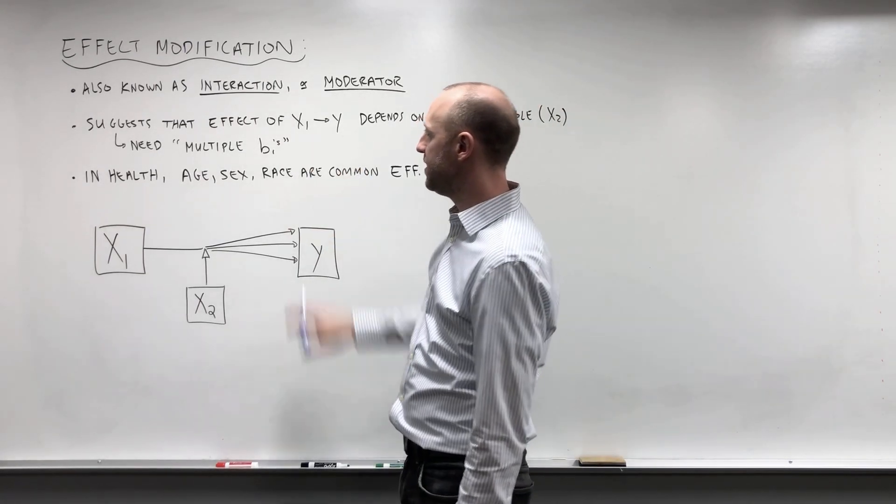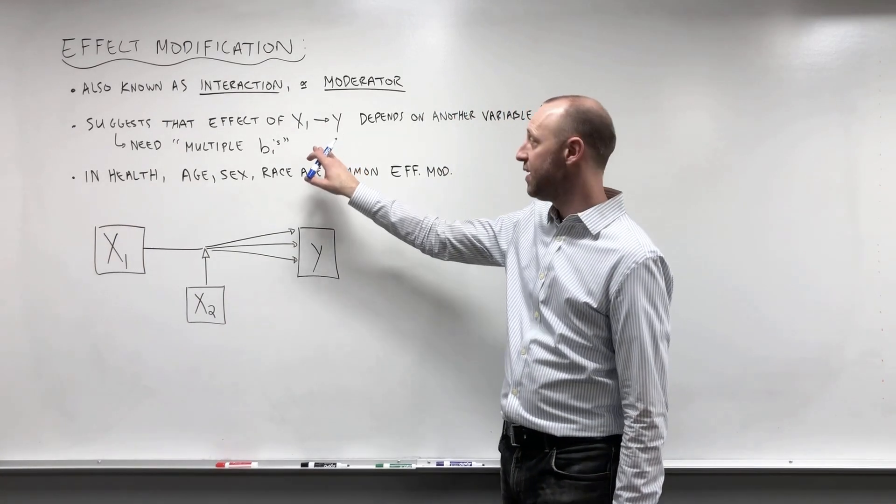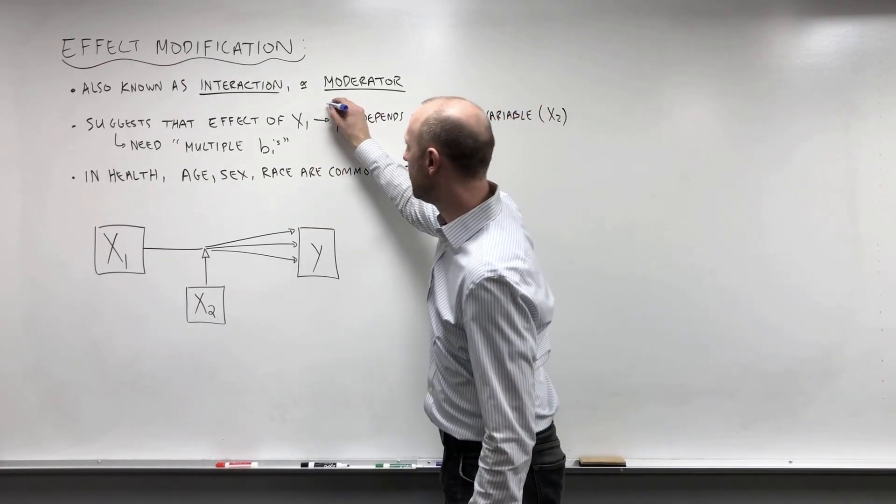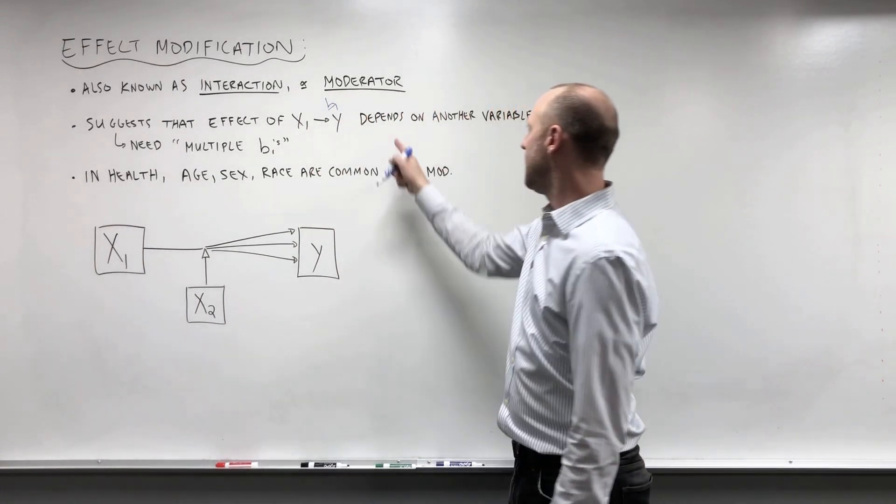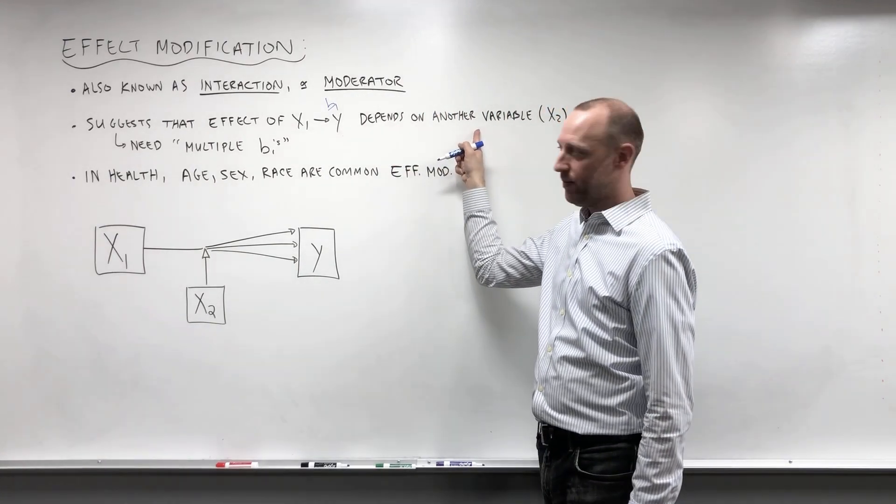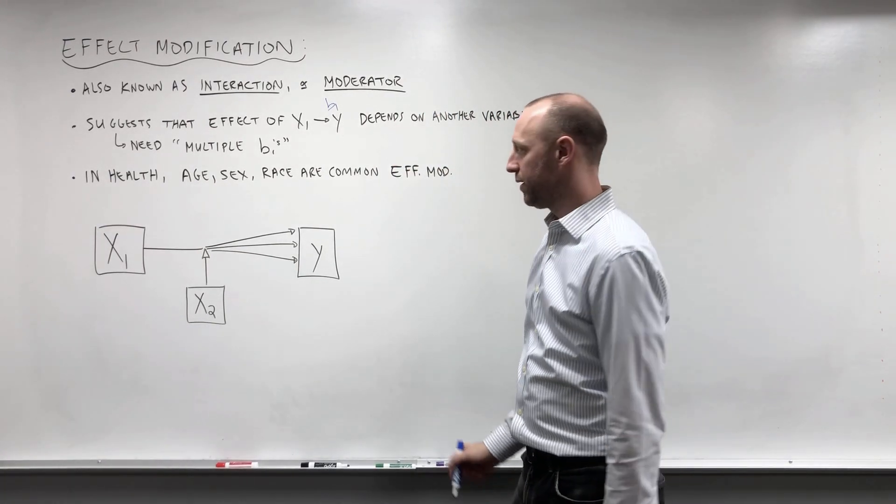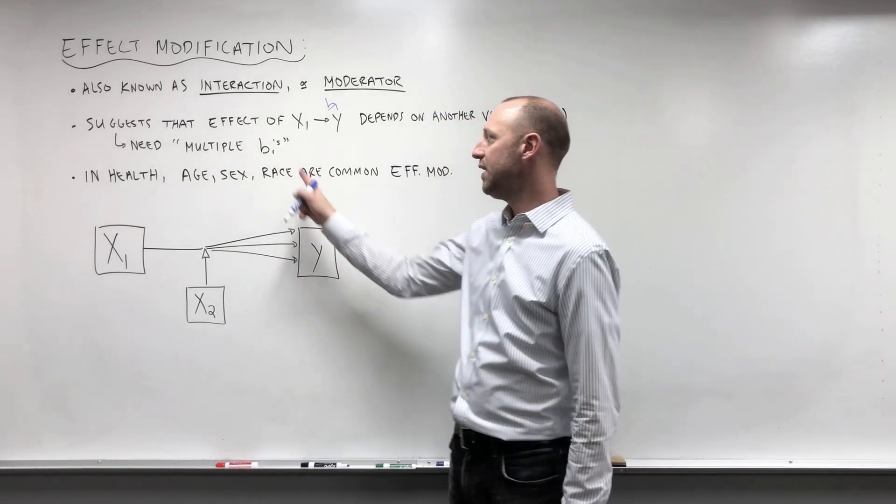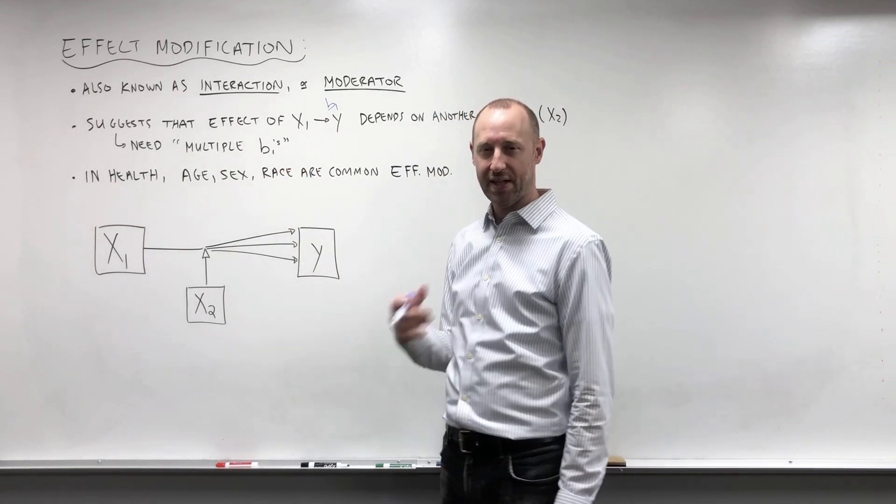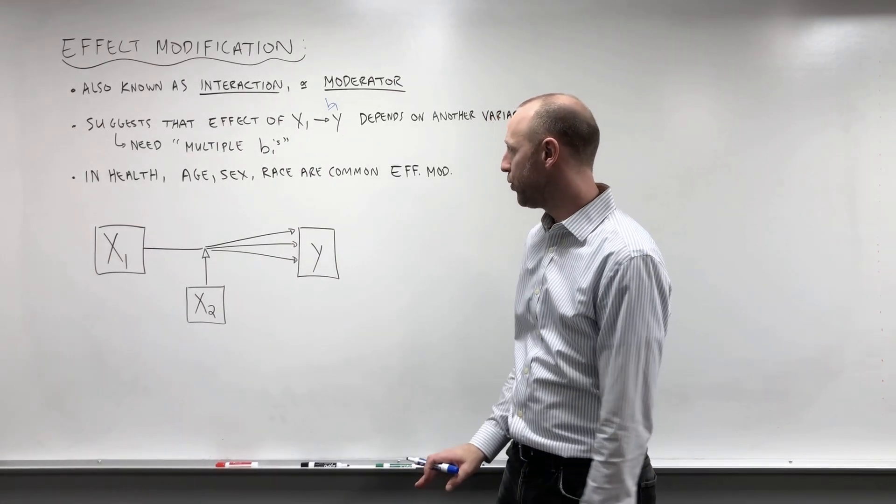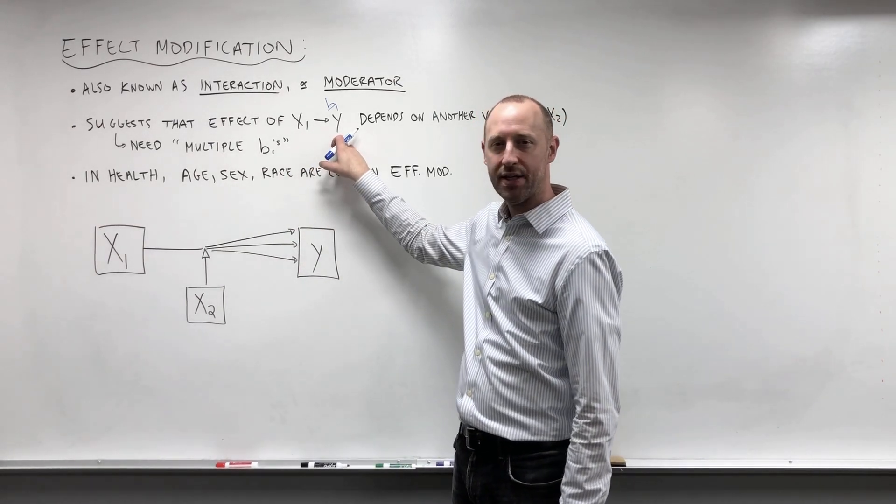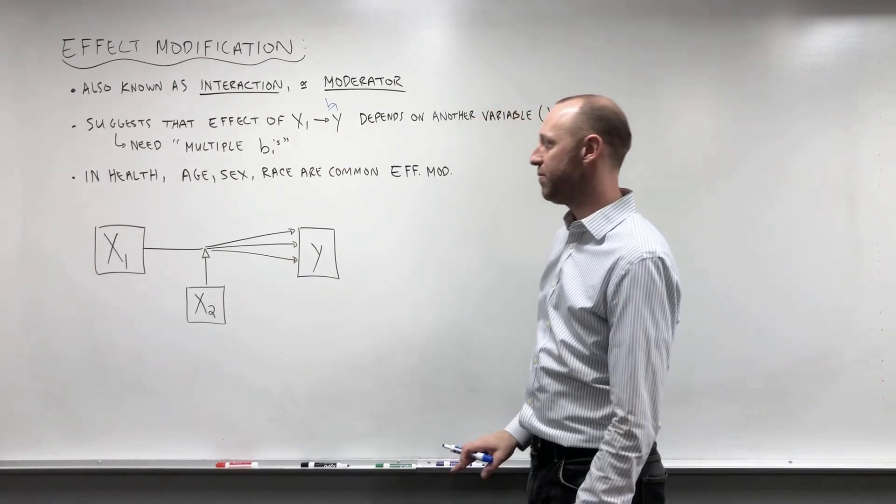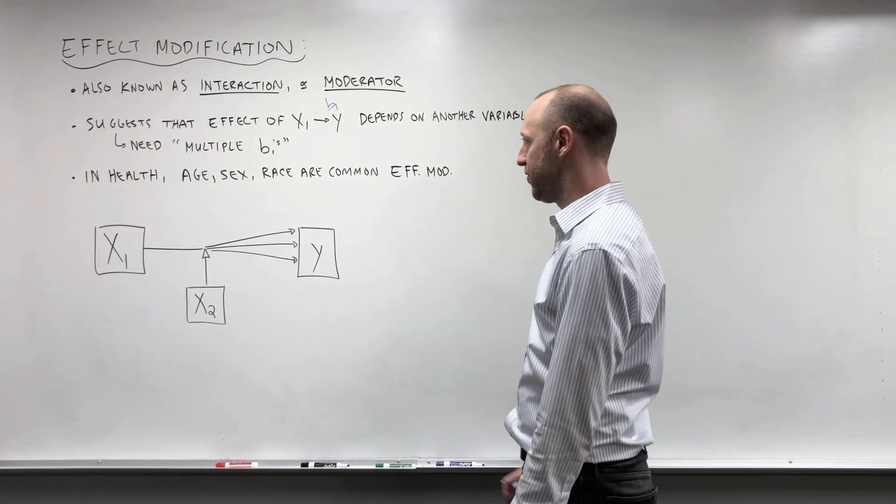Now what this is, is it suggests that the effect that x1 has on y, b1, depends on another variable which we're going to call x2. What we can think of is that we need to have multiple b1's, multiple coefficients. The effect that x1 has on y depends on x2, depends on some other variable or it's modified by that other variable.